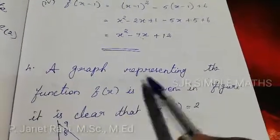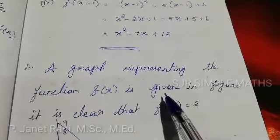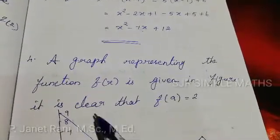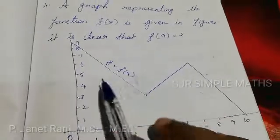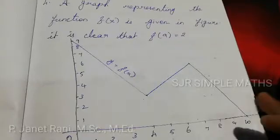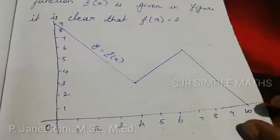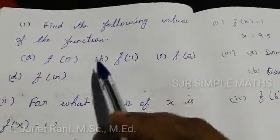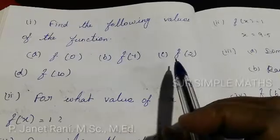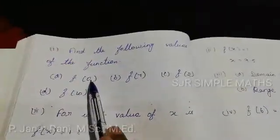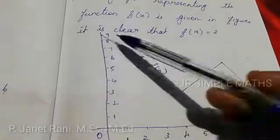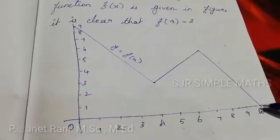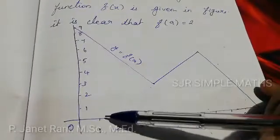Fourth sum: A graph representing the function f(x) is given in a figure. It is clear that f(9) = 2. Find the following values from the graph: f(0), f(7), f(2), f(10). From the graph, f(0) = 9, f(4) = 3, f(10) = 0.